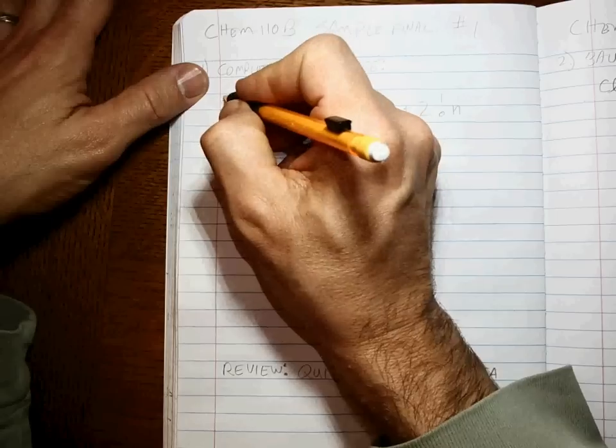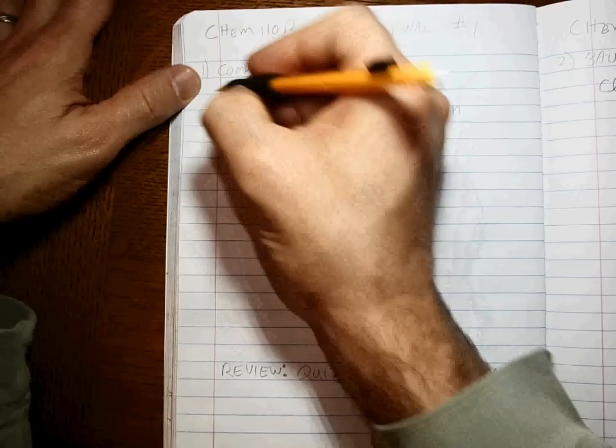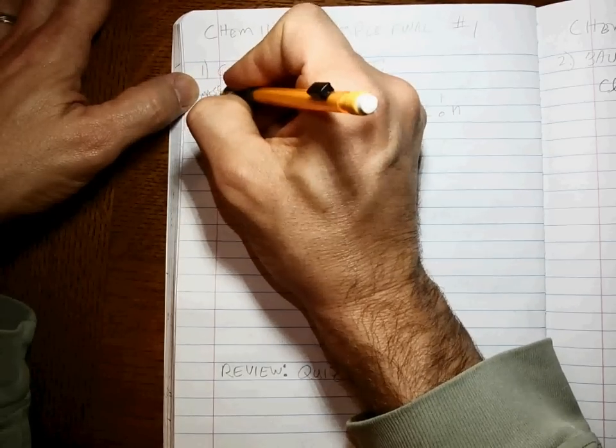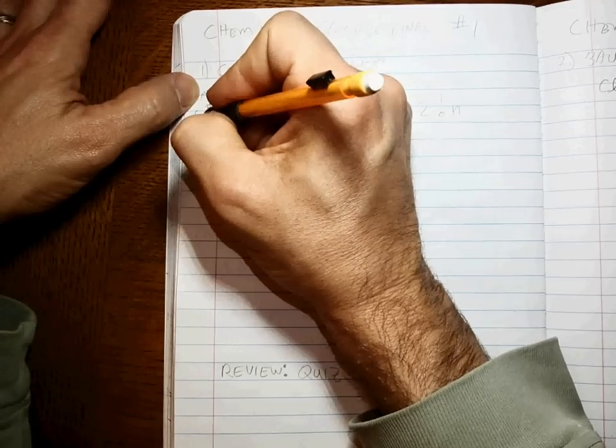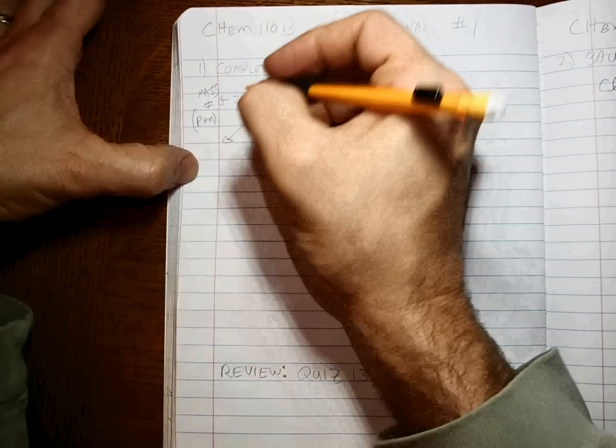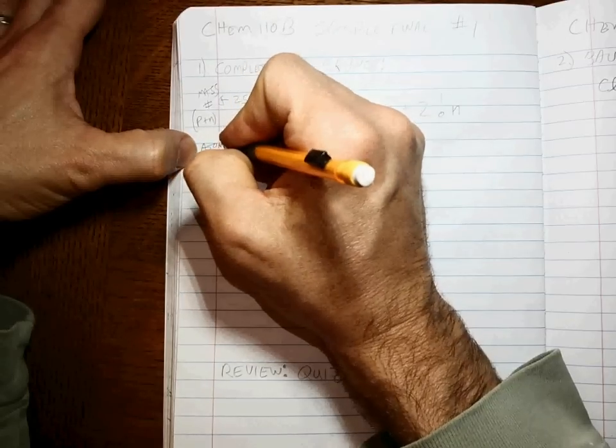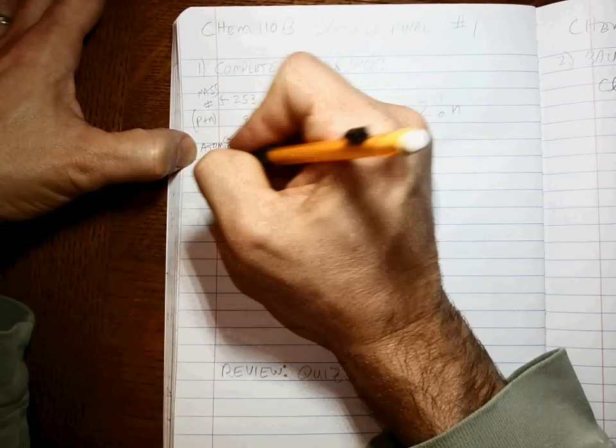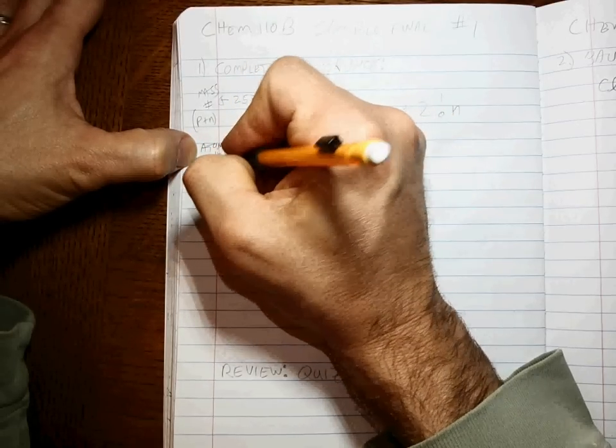Now how do I know that? Remember, this number up here is the mass number, which is the protons plus the neutrons. And this number down here is the atomic number, which is the number of protons.